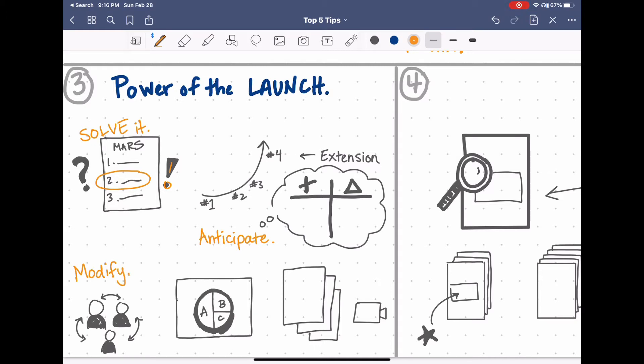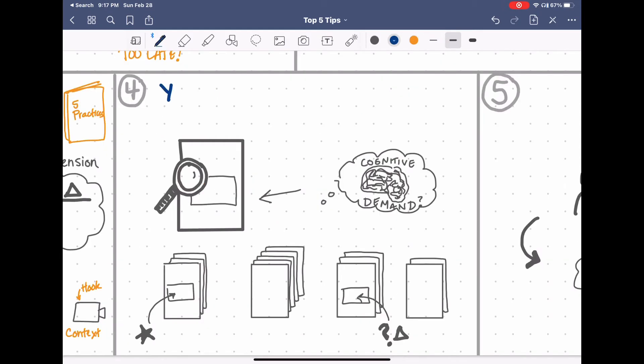Maybe I start off by launching a whole group, having students notice and wonder just about the image or just about the table as they co-craft questions. Maybe I'll do a three-read strategy and then break out into small groups. Maybe I'll add a hook or a video context that get them excited about the task. Either way, this power of a launch is the key step, step zero and step one in the book Five Practices for Orchestrating Rich Mathematical Discussions.